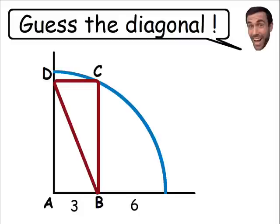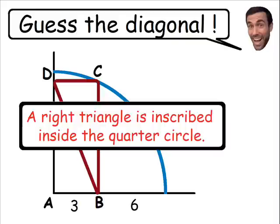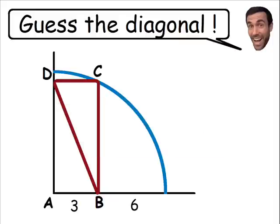Welcome to the solution of another quick fun brain teaser. In this problem we have a right triangle which is inscribed inside of a quarter of a circle. And our goal for this brain teaser is to find the length of side BD of this triangle.